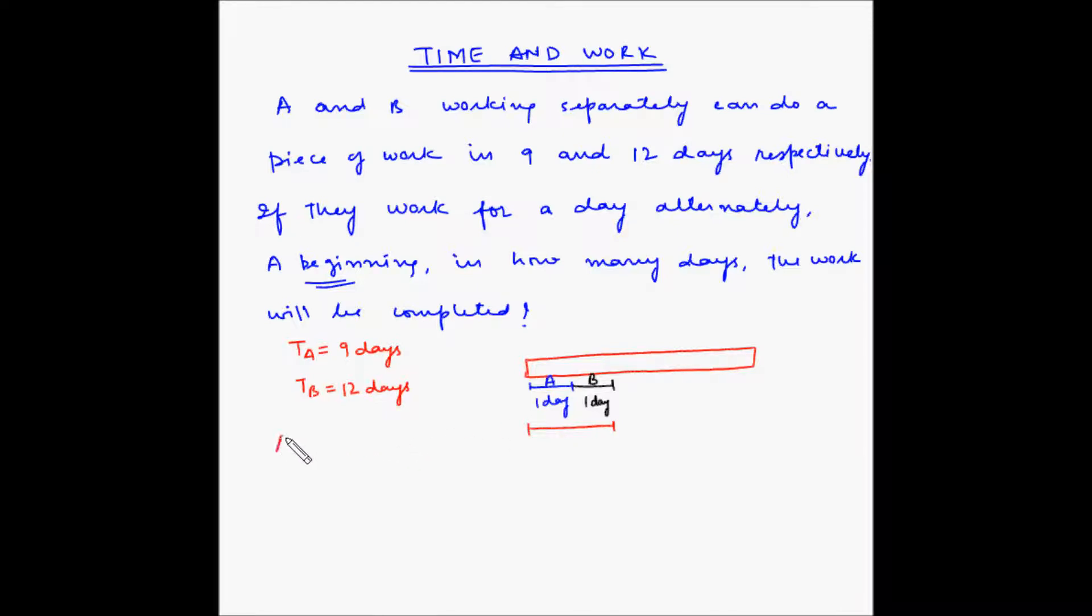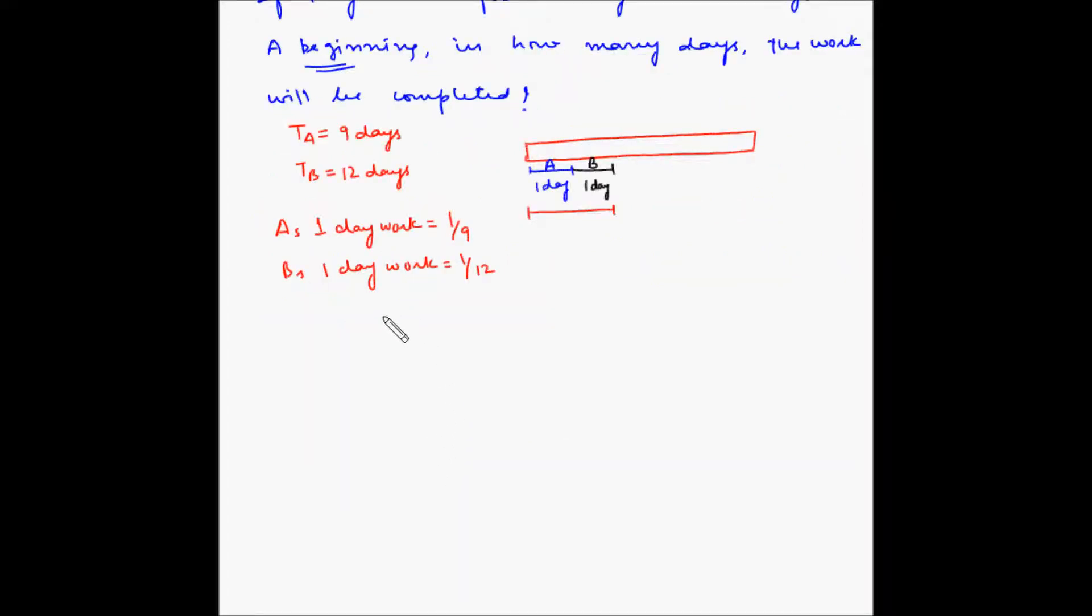A's one day work is 1/9 and B's one day work is 1/12. So A plus B's two days work will be equal to 1/9 plus 1/12.